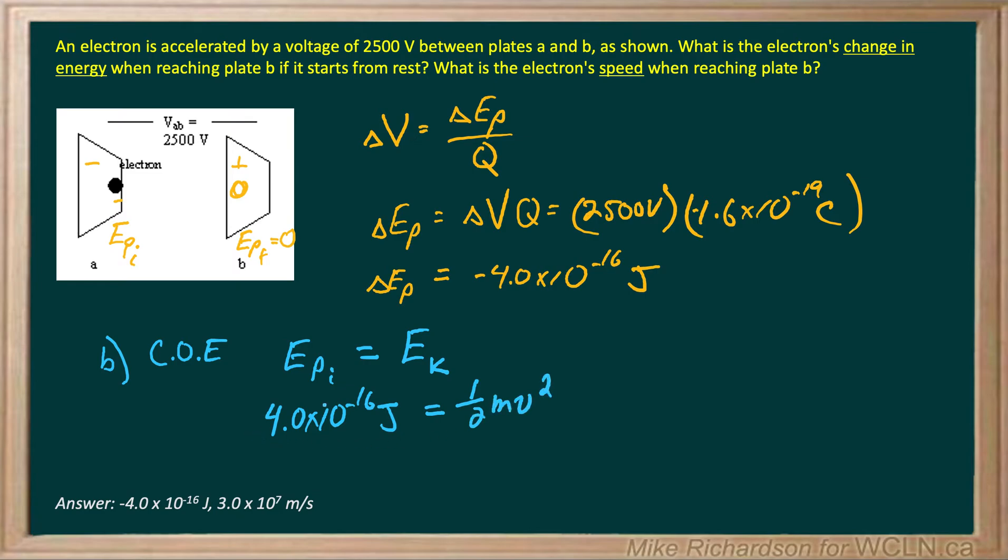Notice that I dropped the negative sign. You got to remember that change in potential energy is EP final minus EP initial. When I solve this, assuming EP final is zero, you end up losing the negative sign.